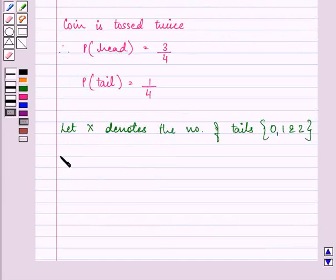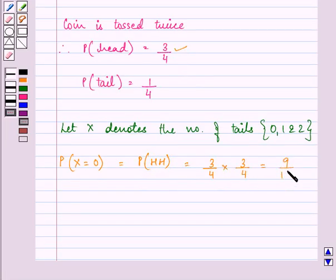So probability when X is equal to zero, this means that probability of getting no tail is equal to probability of getting head two times. That will be equal to three by four, that is probability of getting head into probability of getting head. That is equal to nine by sixteen.